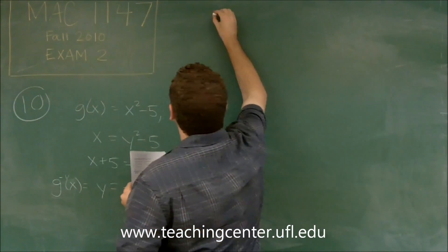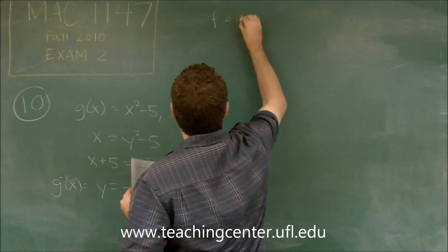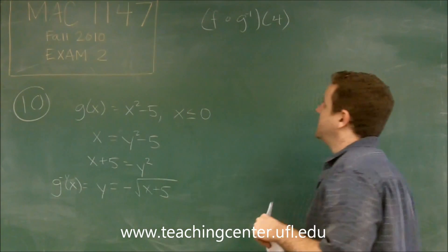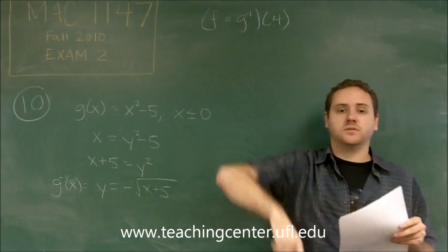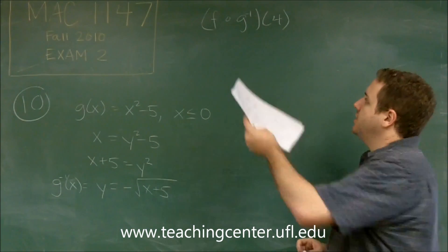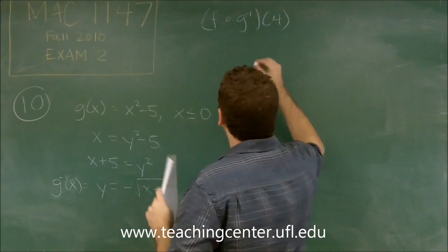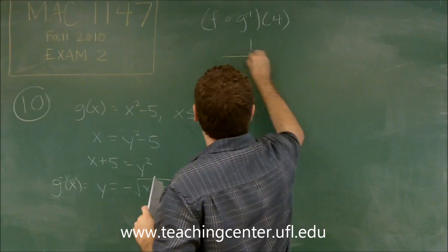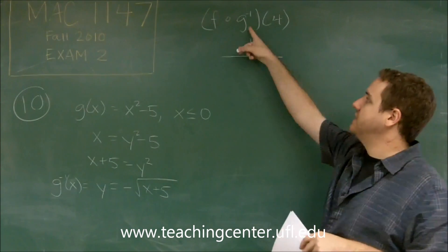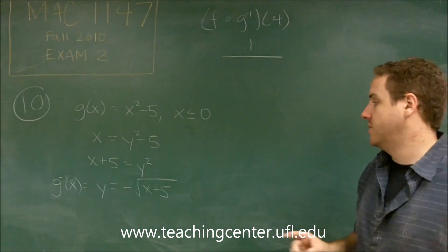So we're asked to do f composed of g inverse of 4. So first we need to figure out what is f composed of g inverse. So remember when you do composition, you take the outer function f, which is 1 over x plus 2. And instead of x, you plug in the entire function of g inverse,